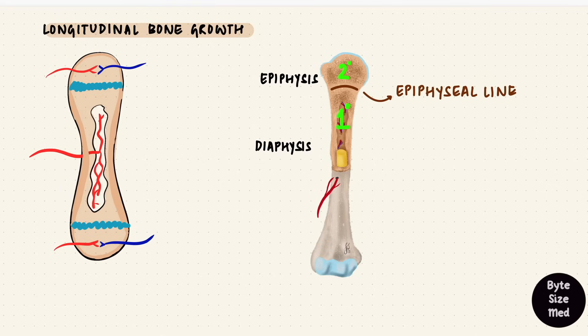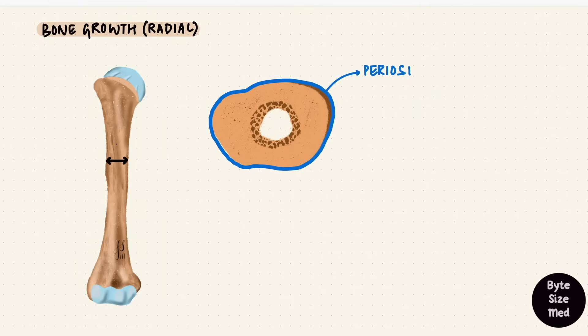That's longitudinal growth. But bone also grows radially. Now that's not endochondral ossification. It's from the periosteum, the outer covering of bone. The endosteum lines the marrow cavities, but to make it easier, I'll just draw it as the inner lining. The center of the diaphysis has the medullary cavity. These layers have cells.